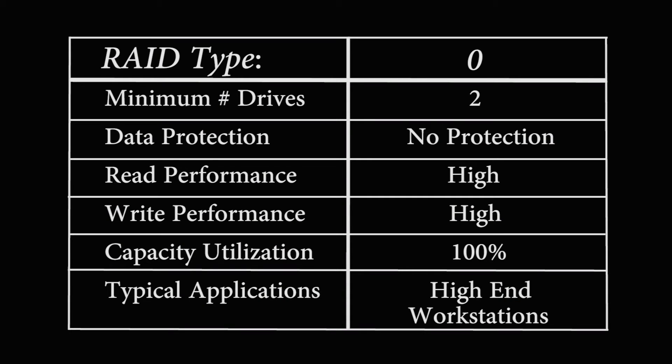As you'll see here on the graph, RAID 0 requires an absolute minimum of two drives. They can go higher than two but the very minimum you need is two. Read performance and write performance are both going to be super high on RAID 0 — this is going to be the fastest. In the first video we mentioned striping. This is a great example of striping, where a RAID controller stripes data across all the available drives it has.